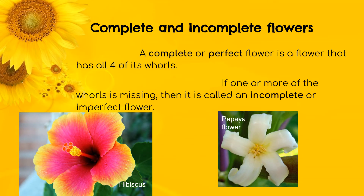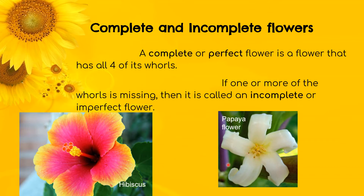Now let's look at the complete and the incomplete flowers. A complete or perfect flower is a flower that has all four of its whorls. If one or more of the whorls is missing, then it is called an incomplete or imperfect flower. Here in the picture of a hibiscus, we can see it has anthers, stigmas, petals, the androecium, the gynoecium, the corolla, and the calyx — so it is a complete flower. Now in the papaya flower, it has the corolla and the androecium but does not have a pistil, making it an incomplete flower.